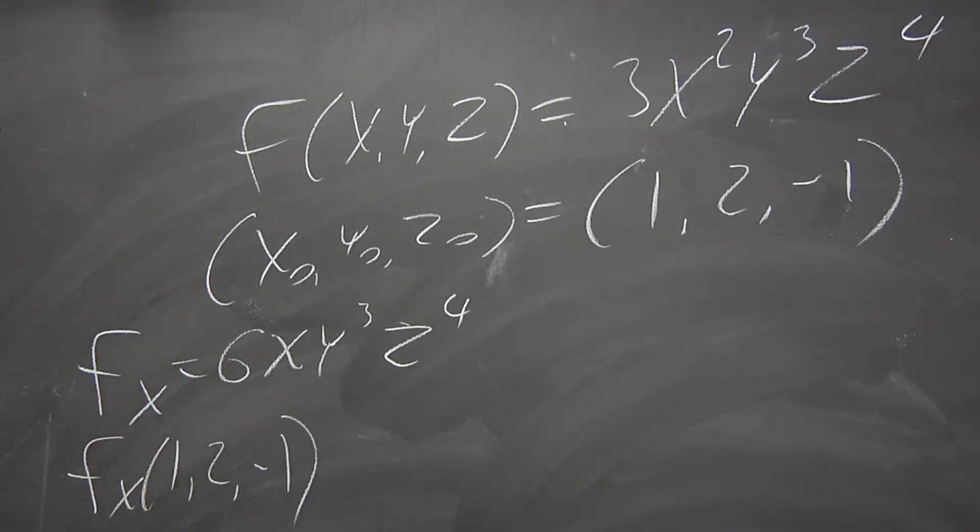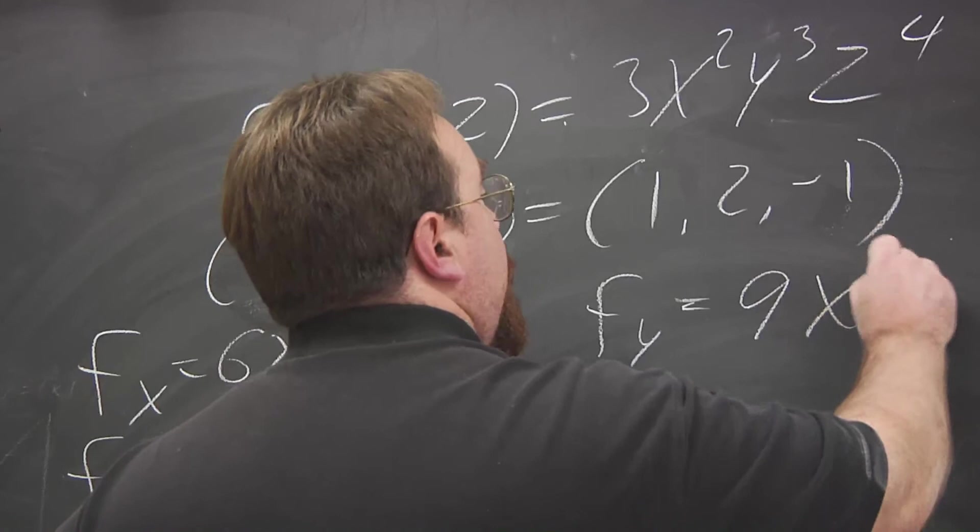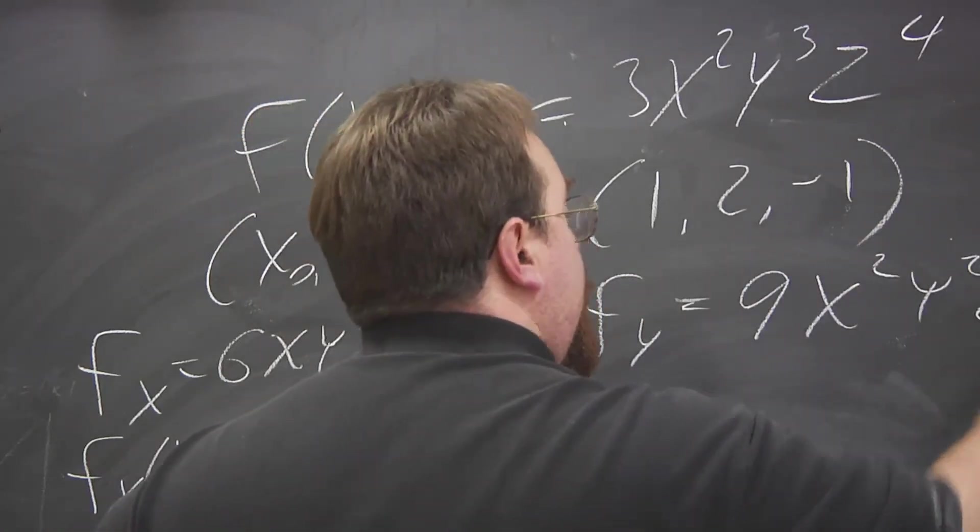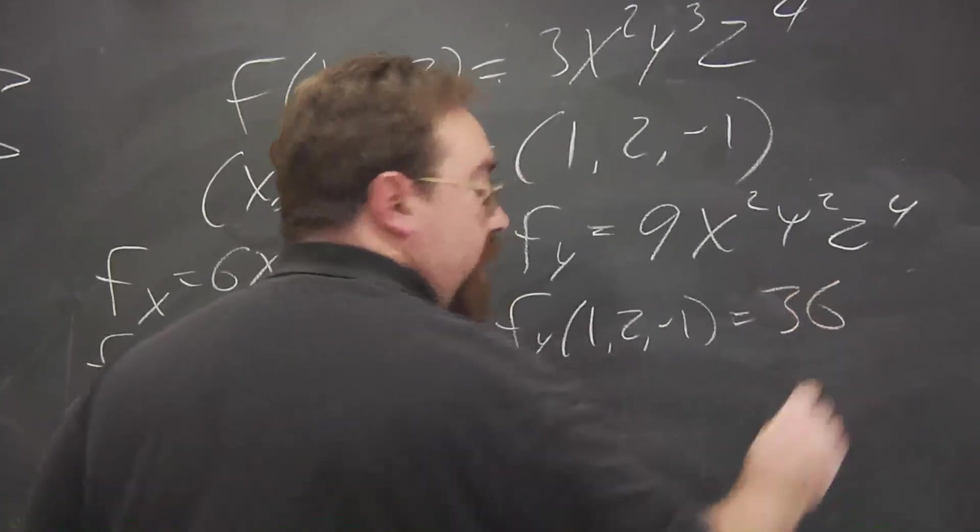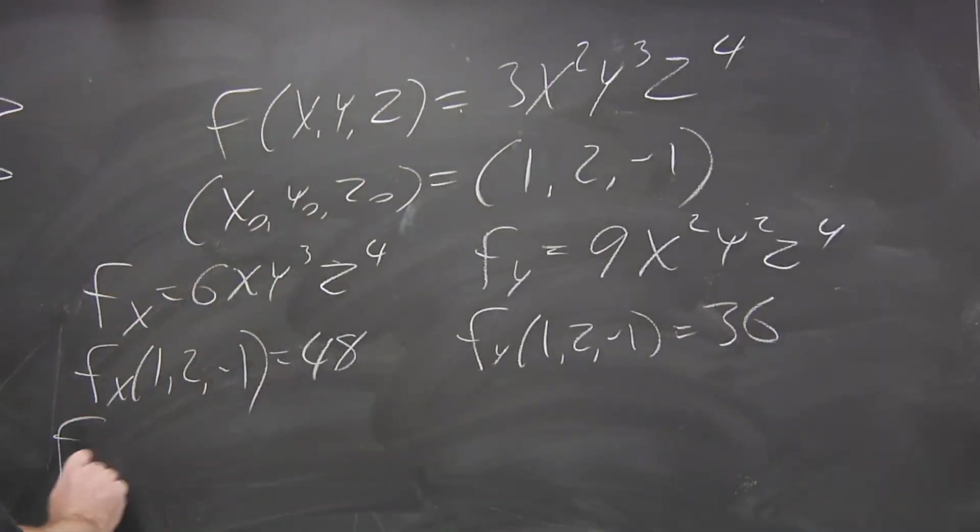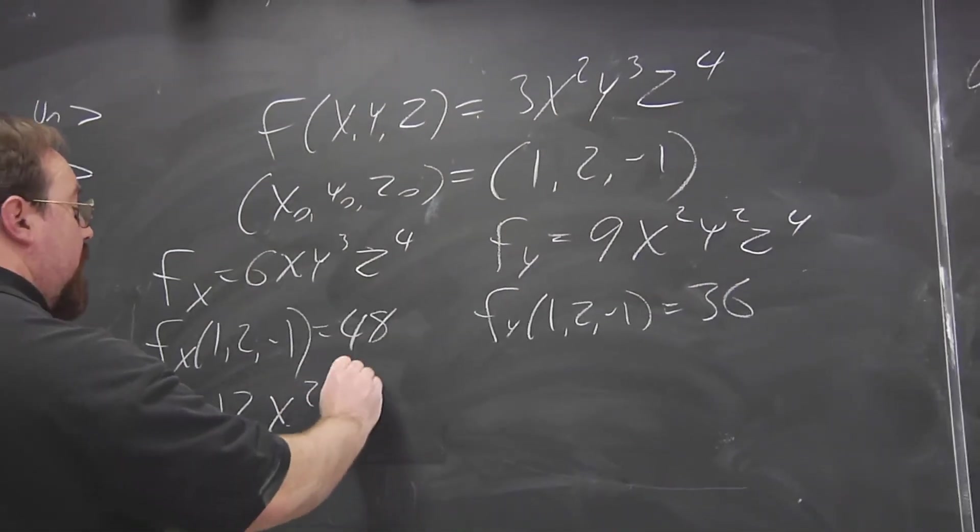6xy³z⁴. So fₓ at this point, plugging in is 48, fᵧ, 9x²y²z⁴. So we plug in the point and we get 36.